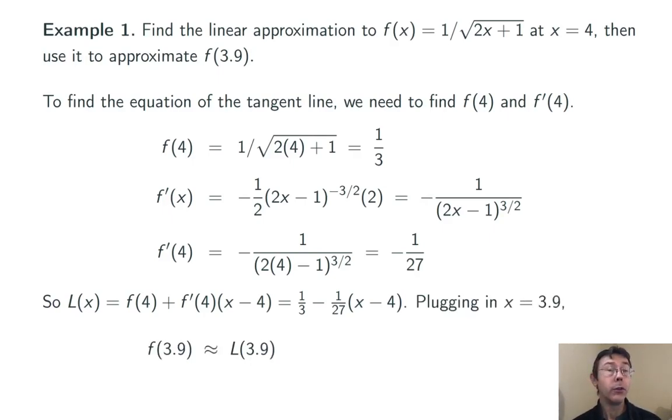If I want to use that linearization to approximate f of 3.9, that just means plugging 3.9 into L of x. So I'm doing 1 third minus 1 over 27 times 3.9 minus 4, so that's negative 0.1 inside the parentheses. Simplifying that a little bit, 91 over 270, or about 0.337.